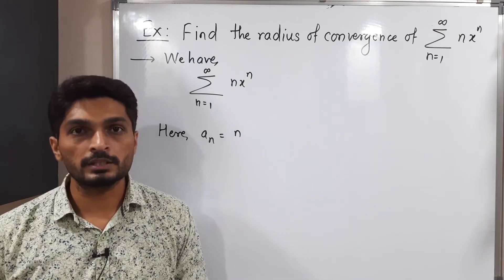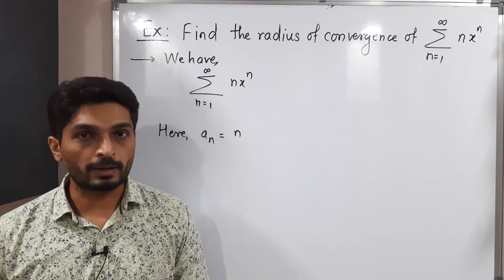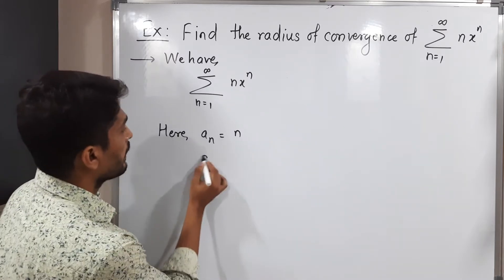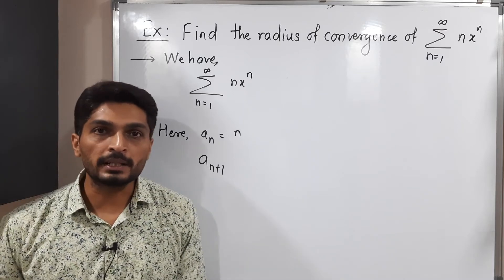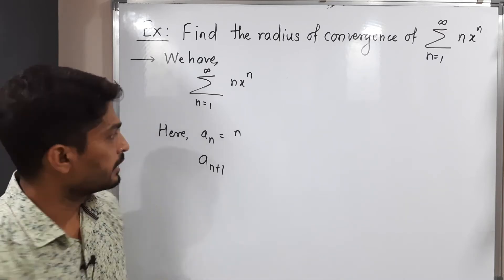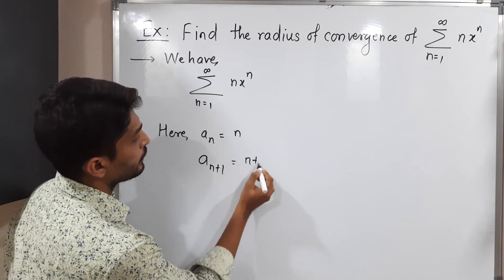So in the formula for radius of convergence, a_(n+1) is also required. Let us write a_(n+1). So how to find a_(n+1)? It's very simple. Simply replace n by n+1. So it will be n+1.